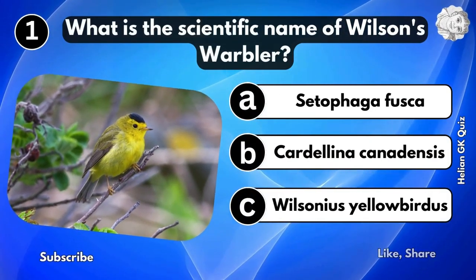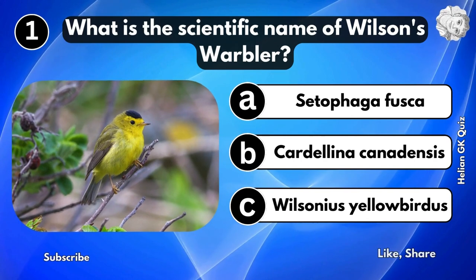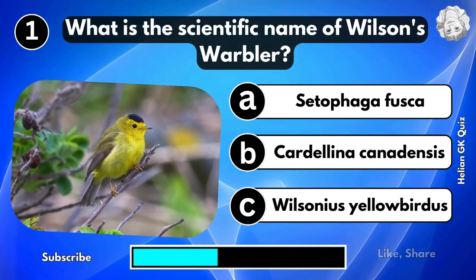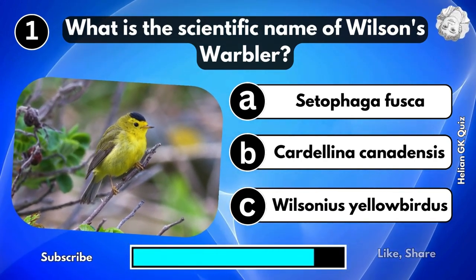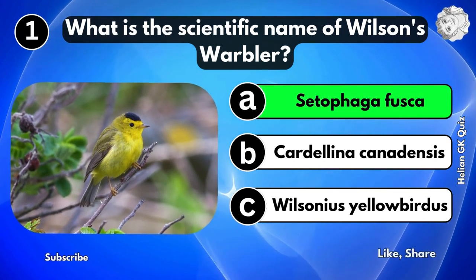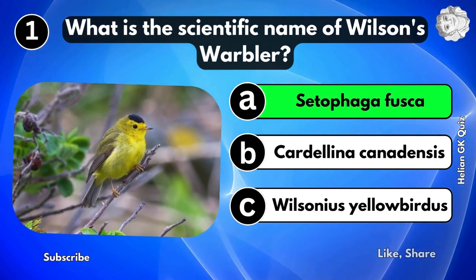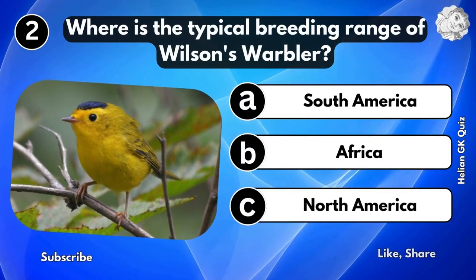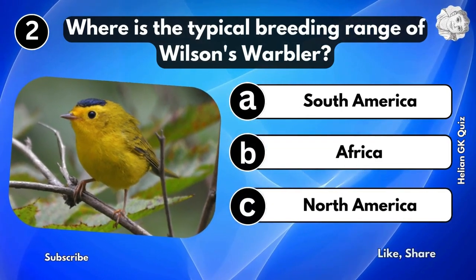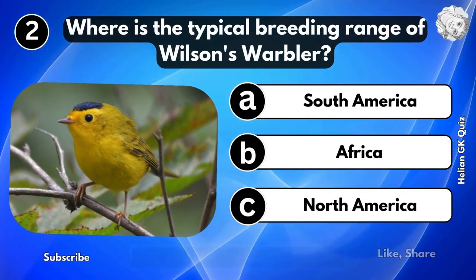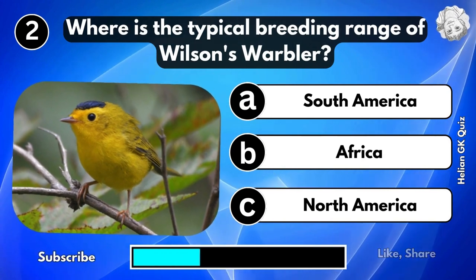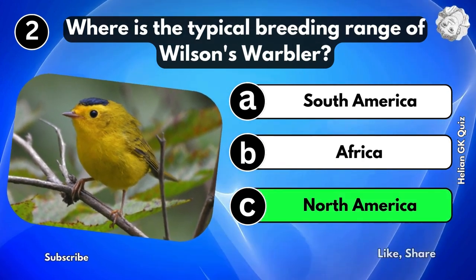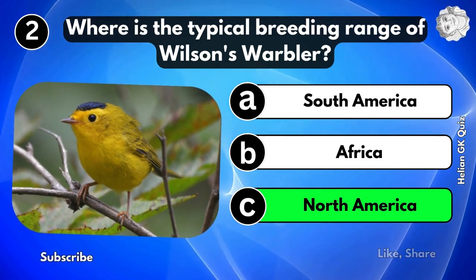What is the scientific name of Wilson's Warbler? Cytophagophusca. Where is the typical breeding range of Wilson's Warbler? North America.